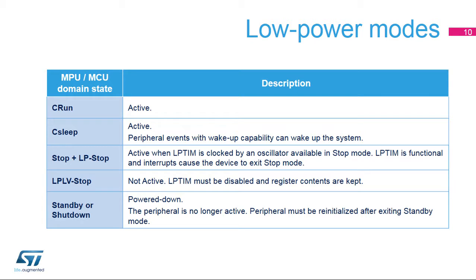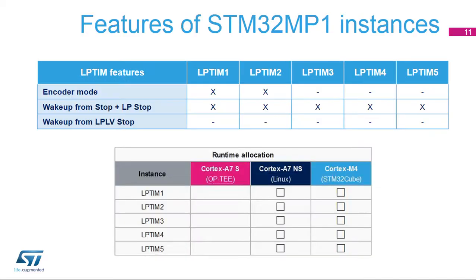The low-power timer peripheral is active in run and sleep modes. It is also active in stop and low-power stop modes when clocked by an oscillator still running in those stop modes. The STM32MP1 devices embed up to five LP-TIM peripherals, where only LP-TIM-1 and LP-TIM-2 instances embed the encoder mode. Wake-up from stop and low-power stop modes is supported by all LP-TIM instances. Wake-up from LPLV low-voltage low-power stop mode is not supported for all LP-TIM instances. All LP-TIM instances can be allocated at run-time either to the Cortex-M4 core or to the non-secure Cortex-A7 core.